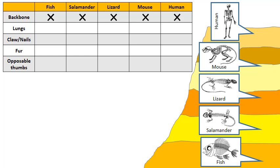Now of these five species, which of these have lungs? Everything but the fish. If I look at these five, which ones have claws or nails? That would be the lizard, the mouse, and the human.